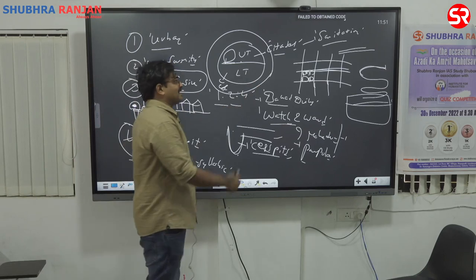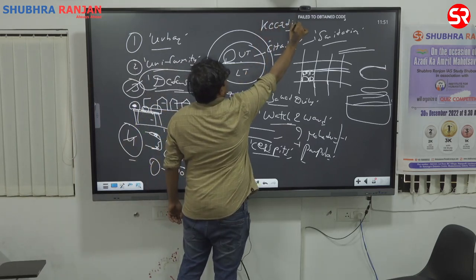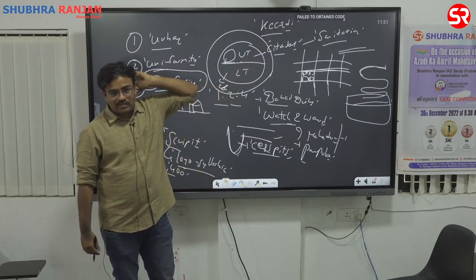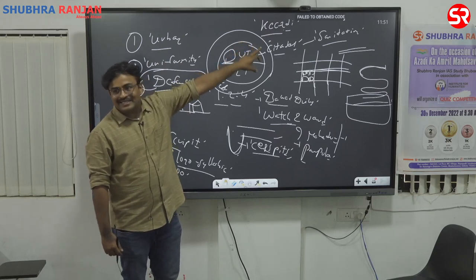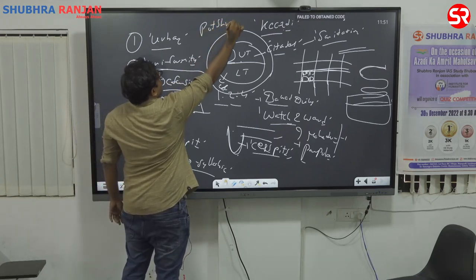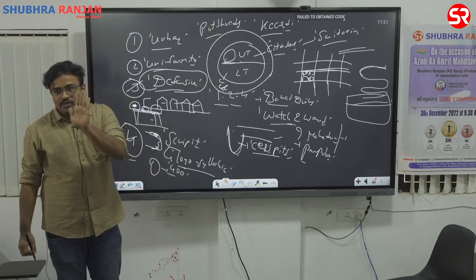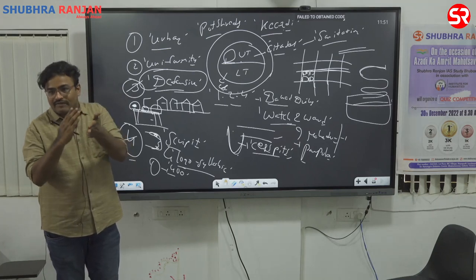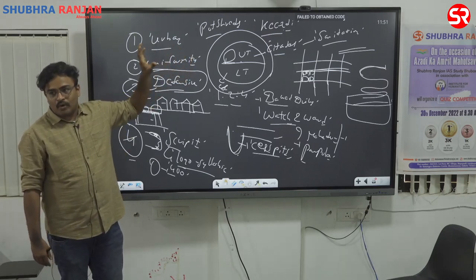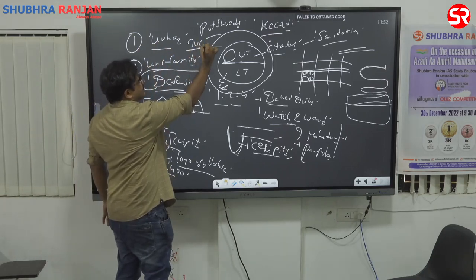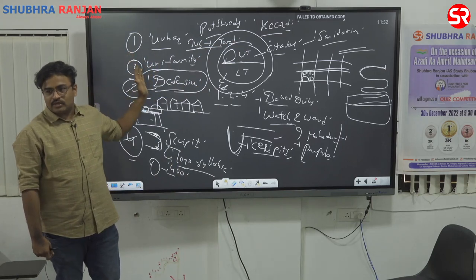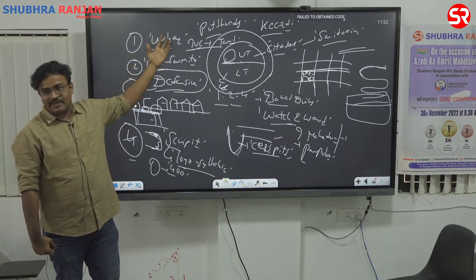Recently, about ten years ago, a site known as Keeladi (written as Keezhadi) was discovered. At this site, pot sherds were found, and studying them showed a clear evolution from the IVC script to the Tamil script. The Keeladi pot sherds clearly show the link between IVC script and Tamil script. Today, most of the debate is settled — the IVC script is considered somewhat similar to the Tamil (Dravidian) script, proven conclusively by the Keeladi excavations.